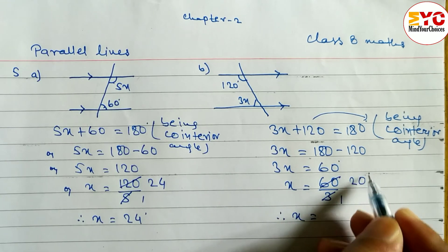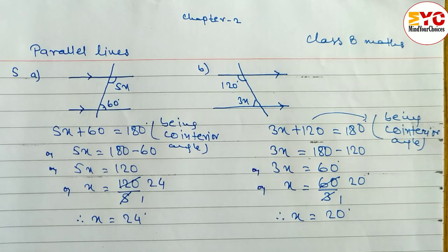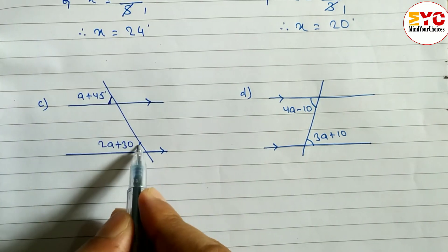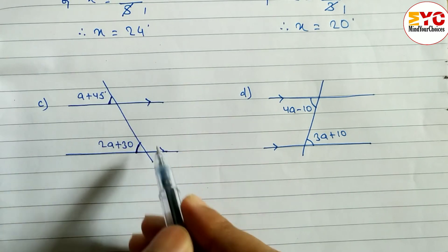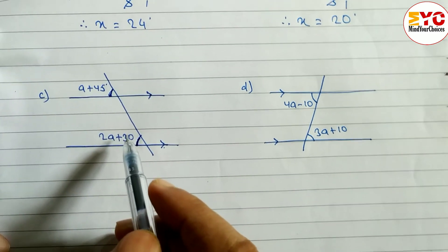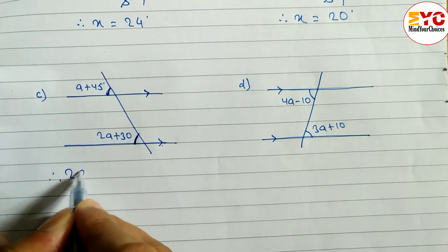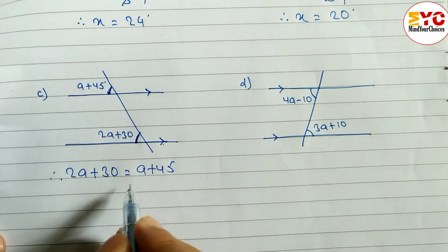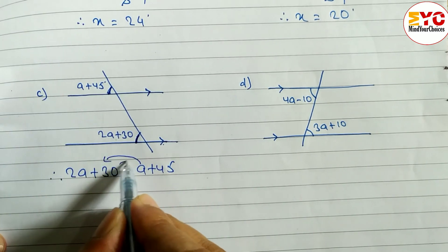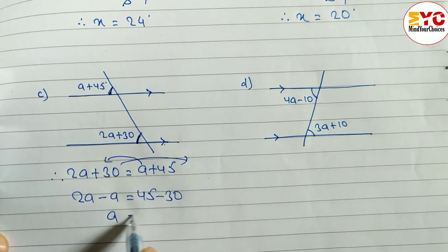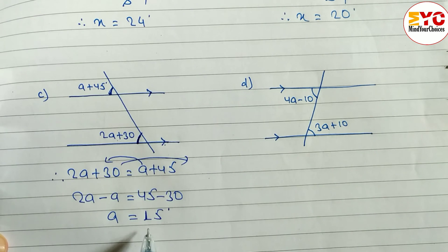The value of x is 20 degrees. Now look at question (c). One angle is outside and one is inside these two parallel lines, so the relation of these two angles is corresponding angles. Corresponding angles are always equal. Therefore: 2a + 30 = a + 45. We take 'a' to the left and 30 to the right: 2a − a = 45 − 30, giving a = 15 degrees.